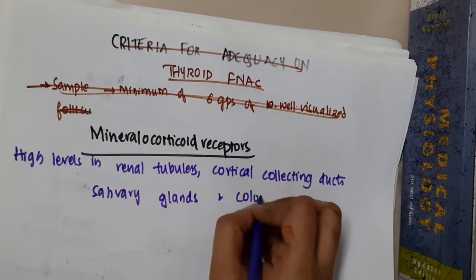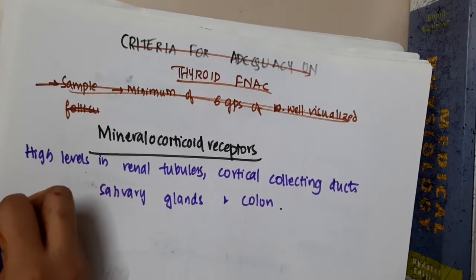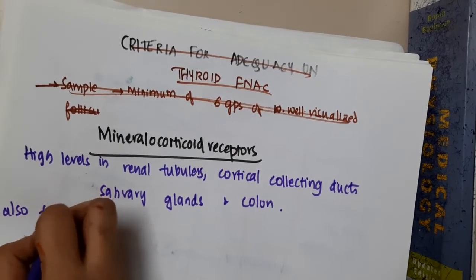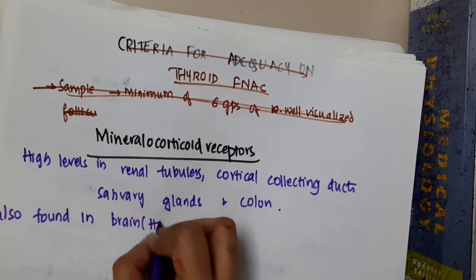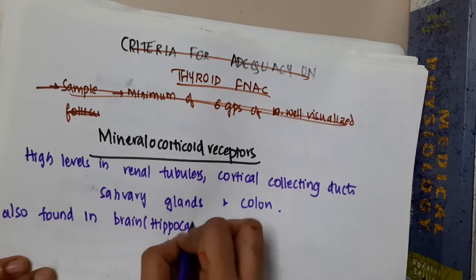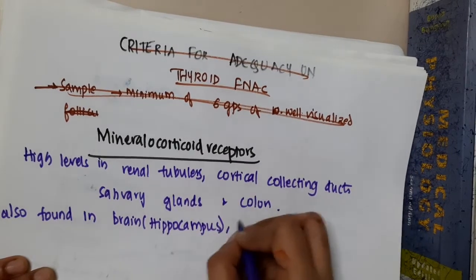Mineralocorticoid receptors are also found in multiple areas like the brain, specifically in the hippocampus, and also in the myocardium.